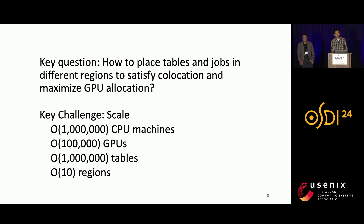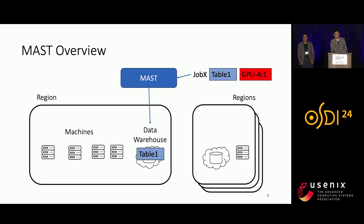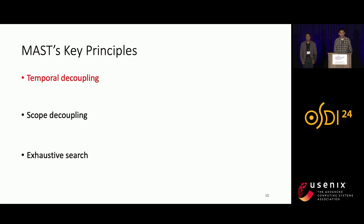As one can imagine, this is a complex optimization problem with multiple constraints, further challenged by the scale of Meta's infrastructure, which includes millions of machines, hundreds of thousands of GPUs, and millions of tables. To answer this question, Meta has built MAST. With MAST, a user simply submits her job—including the input table and GPU demand—and MAST selects the region to store the input table and assigns machines from that region to run the job. To achieve its goals, MAST relies on three key principles: Temporal Decoupling, Scope Decoupling, and Exhaustive Search.